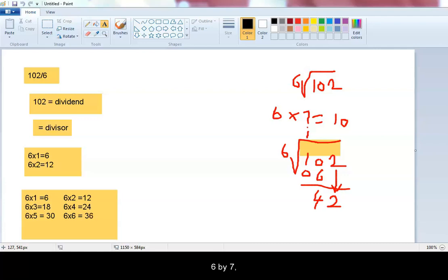6 multiplied by 7 equals 42. Aha! There we have it.